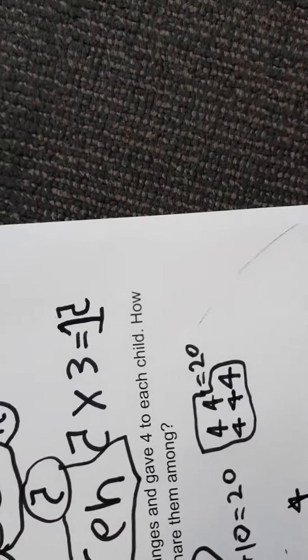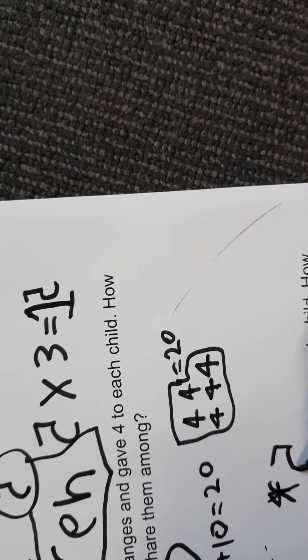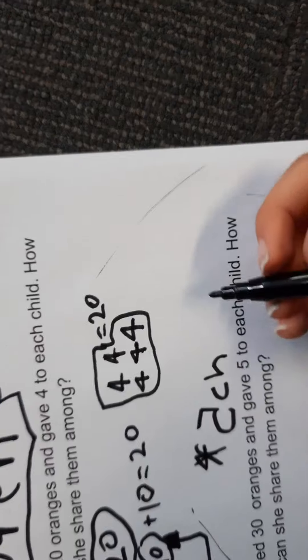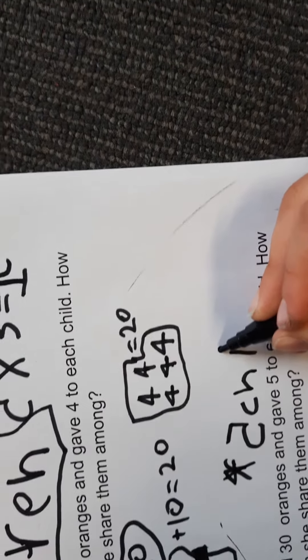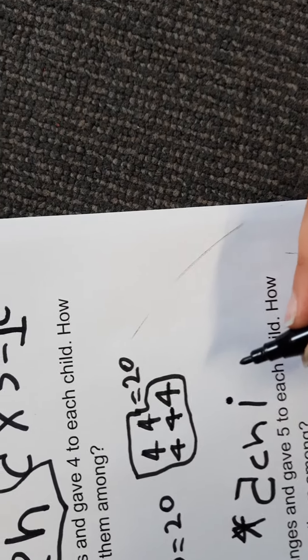How many people does she give it to now? So what are we going to write down here in your mathematical representations? Is it going to be five, five, five what? Five children.